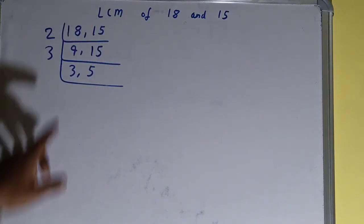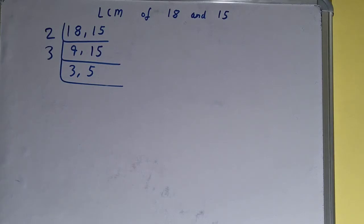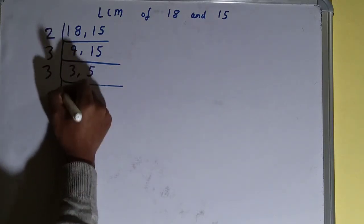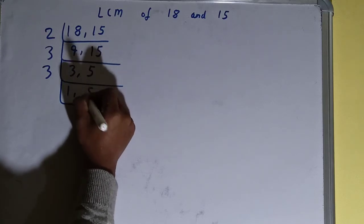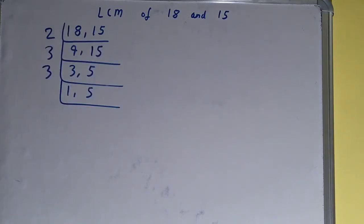Now again we'll check: is any of the number divisible by 3? Only the first number is, so we'll divide and we'll be having 1, and this 5 will remain 5. We will not touch it.